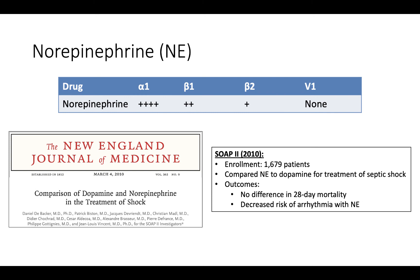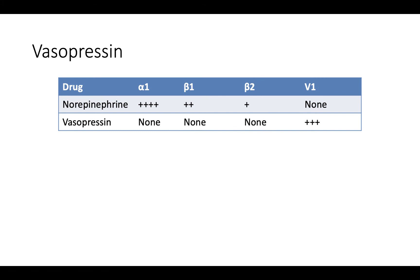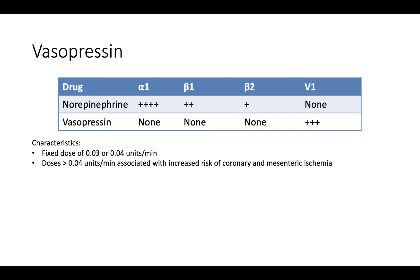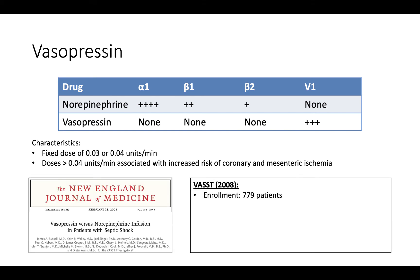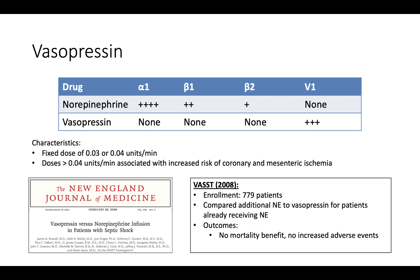If the patient's MAP remains less than 65 on increasing doses of norepinephrine, the next vasopressor to add is vasopressin. Vasopressin acts on vasopressin receptors and is given at a fixed dose of 0.03 or 0.04 units per minute, because doses greater than 0.04 increase the risk of coronary and mesenteric ischemia. The VASST trial in 2008 compared adding additional norepinephrine versus vasopressin for patients already receiving norepinephrine. While the study found no mortality benefit for vasopressin, it did allow for decreased dosages of norepinephrine. Therefore, for patients with norepinephrine-refractory shock, vasopressin is an appropriate second agent to add.